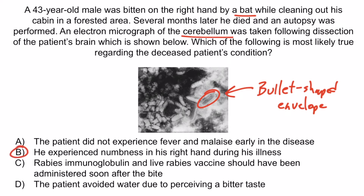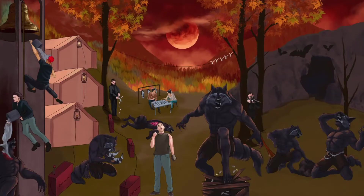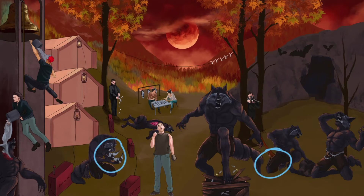The correct answer is B — he experienced numbness in his right hand during his illness. Recall that the virus can travel up axons in a retrograde manner, ultimately messing with the sensation or motor function of the patient. The beast with the tranquilizer dart represents sensation loss or numbness as well as loss of motor function. The beast attacking the seagulls represents attaching to the acetylcholine receptors, and the dynamite represents traveling up the dynein motors of the axon.